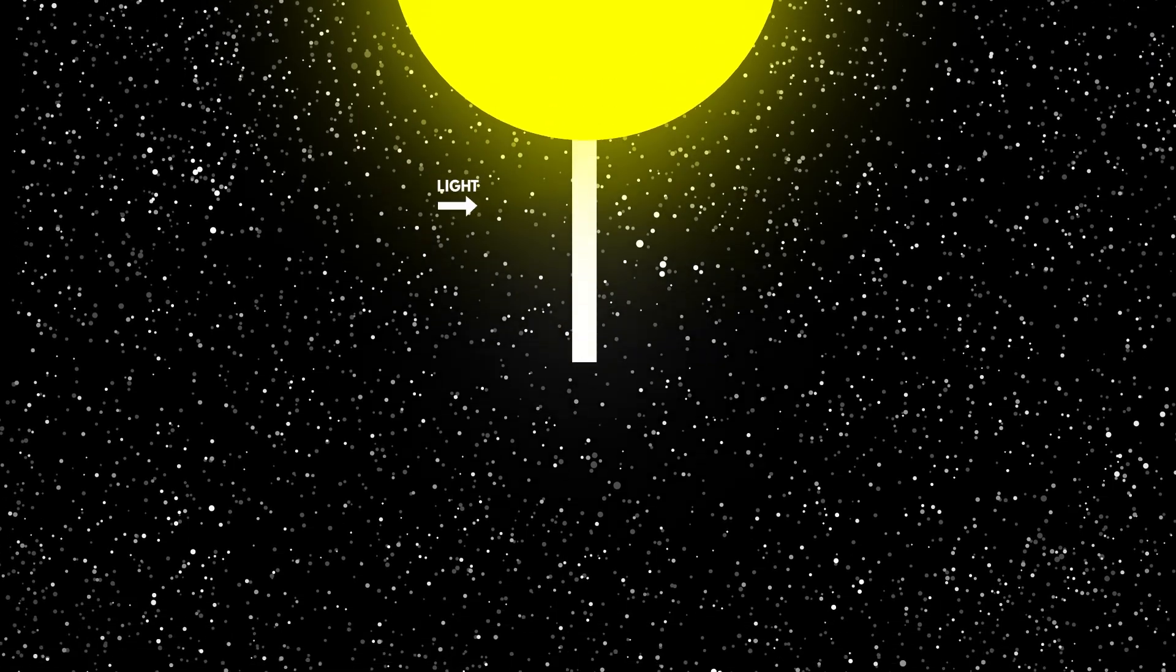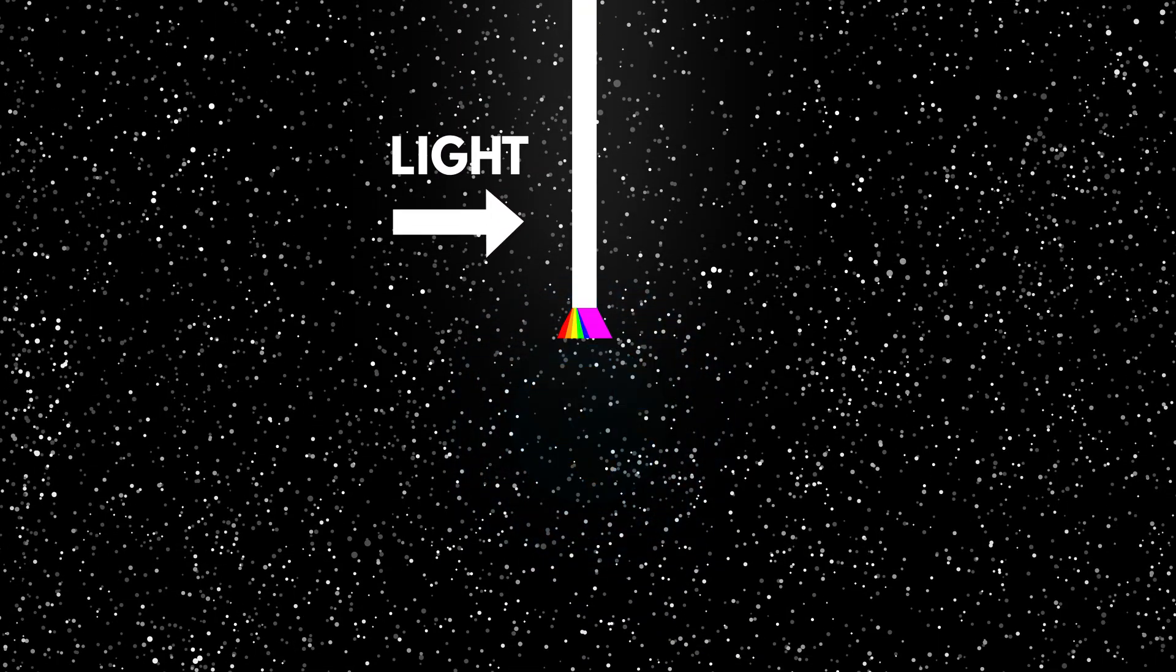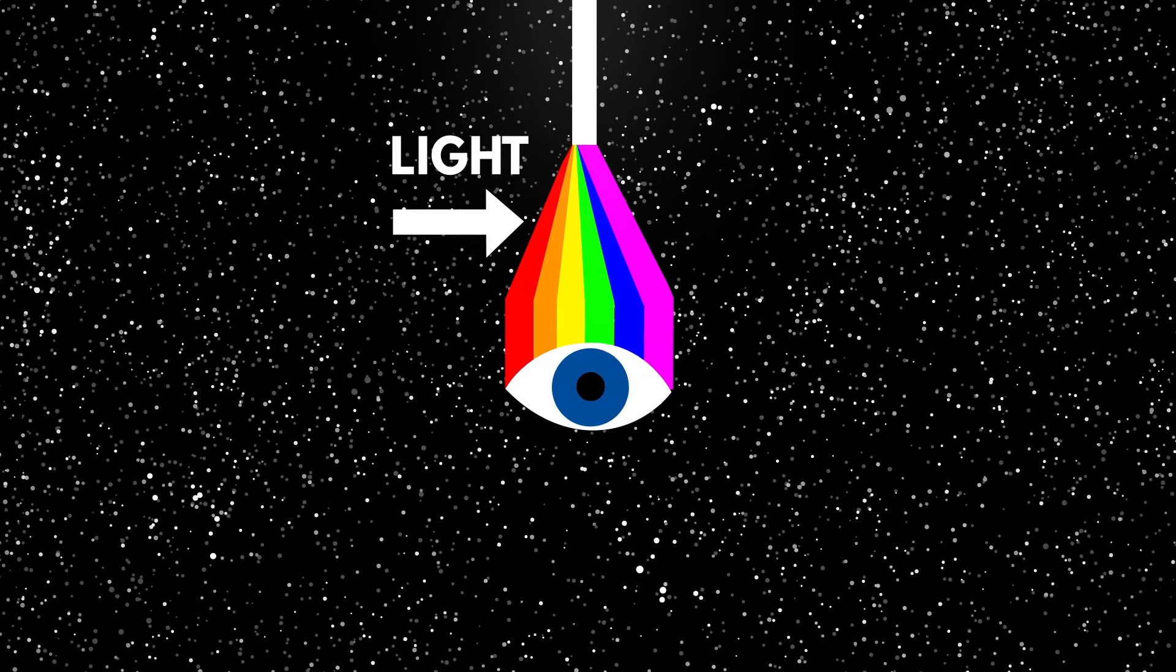You see, light travels in a straight line until it hits something, like water vapor or dust. This causes it to scatter into the different visible light colors we can see.